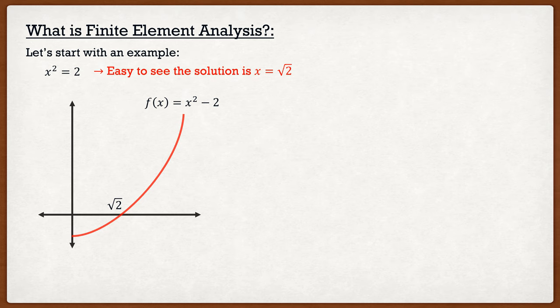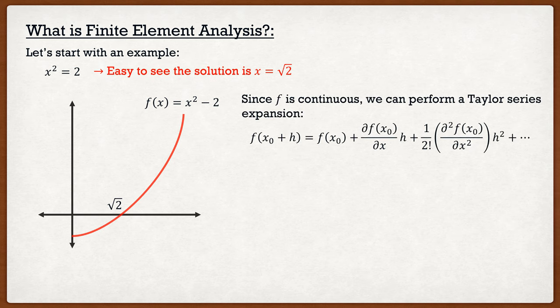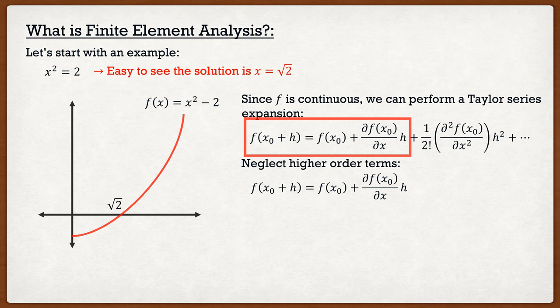But again, it's easy to see the solution, but how can we make a numerical approximation? Well, we know x² - 2 is a nice continuous function. Therefore, we can perform a Taylor series expansion. We know f(x₀ + h) is simply f(x₀) plus the partial derivative of f(x₀) multiplied by h, and so on. When we're looking at numerical solutions, we can't go on and on. We actually have to have a very clearly defined function. So let's neglect the higher order terms and only focus on those first two terms. Therefore, I have a nice equation for f(x₀ + h).